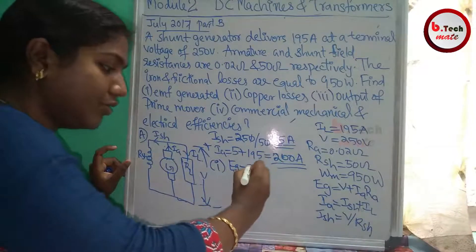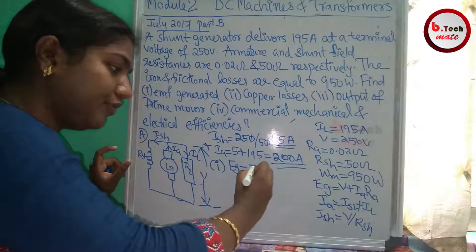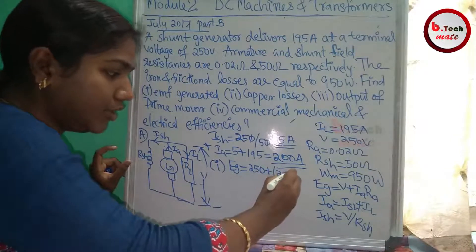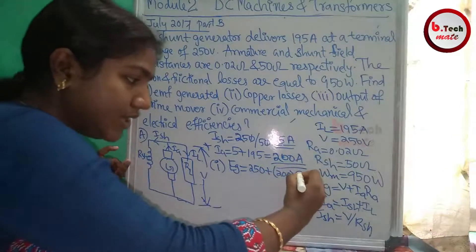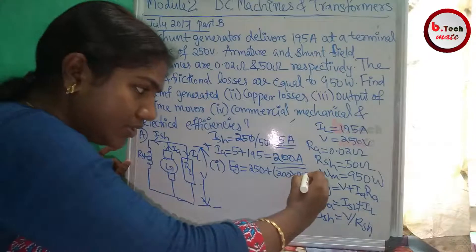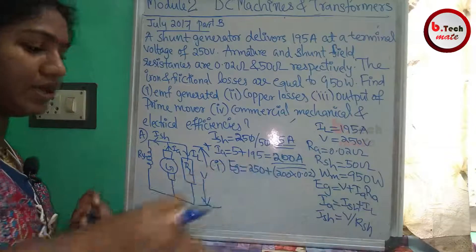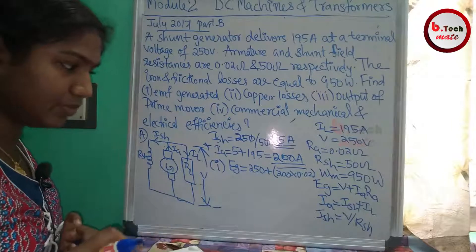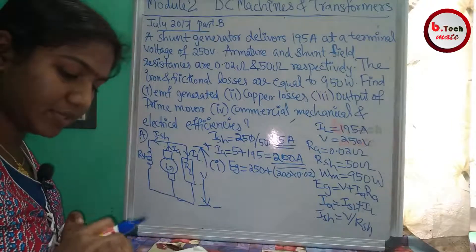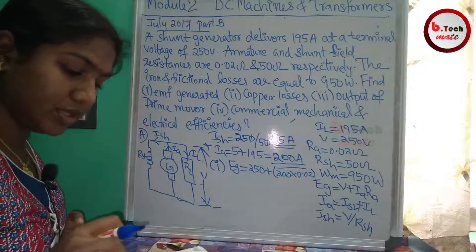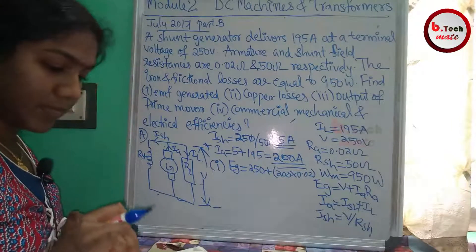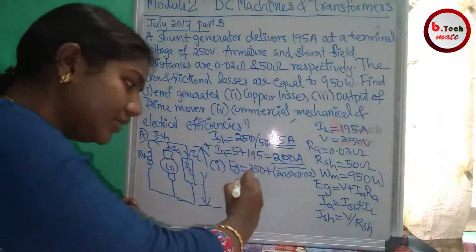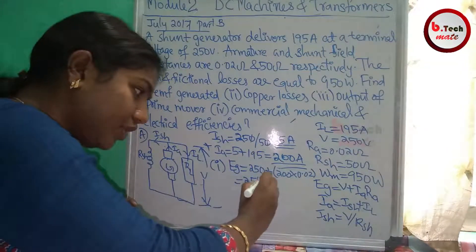Now calculate the generated EMF: EG = V + Ia × Ra = 250 + 200 × 0.02. Calculating: 200 × 0.02 = 4, so EG = 250 + 4 = 254V.